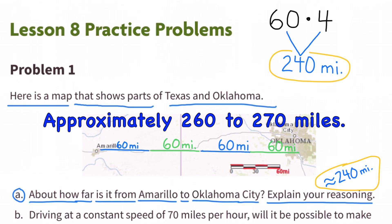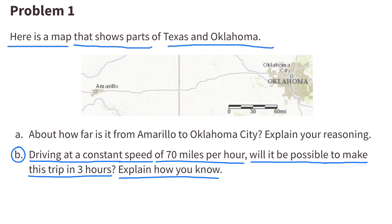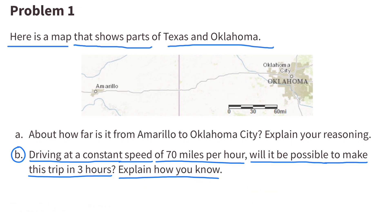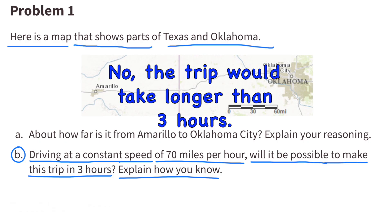If driving at a constant speed of 70 miles per hour, will it be possible to make this trip in three hours? A distance of 240 miles divided by 70 miles per hour equals more than three hours of driving. So the answer is no — even driving in a straight line, the trip would take longer than three hours.